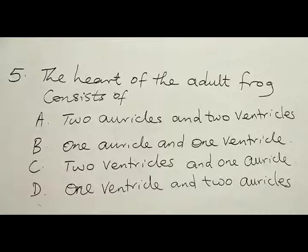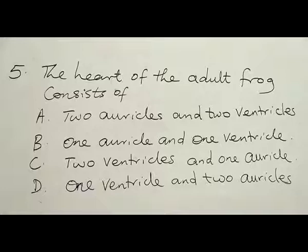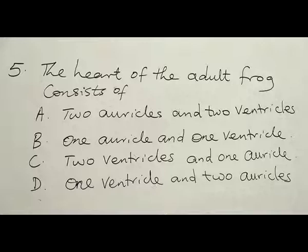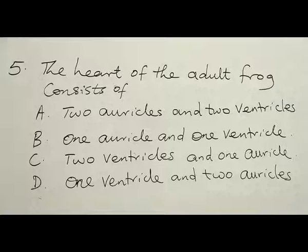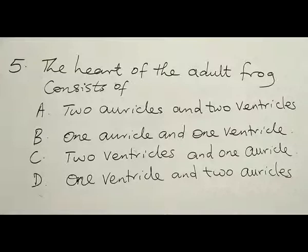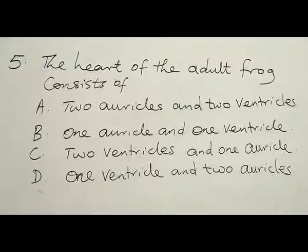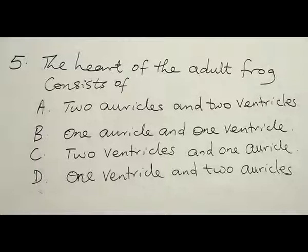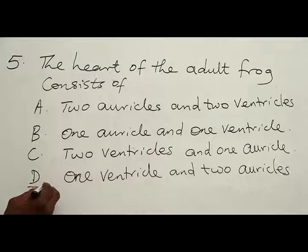Number five: the heart of the adult frog consists of: A, two auricles and two ventricles; B, one auricle and one ventricle; C, two ventricles and one auricle; D, one ventricle and two auricles. Studies have shown that the heart is evolving from fish down to mammals. In fish, we have only one atrium and a simple ventricle. A frog has two auricles at the top and one ventricle pumping the blood out. So the answer is D.